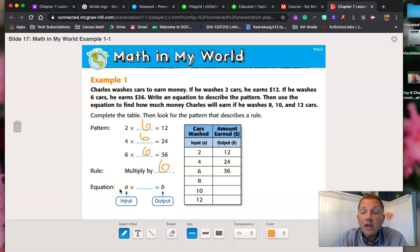So my rule is to multiply by 6. So my equation would be A, which is over here, my input, times 6, equals my output, which is over here, whatever number, and that's what I'm trying to figure out with the rest of this equation.